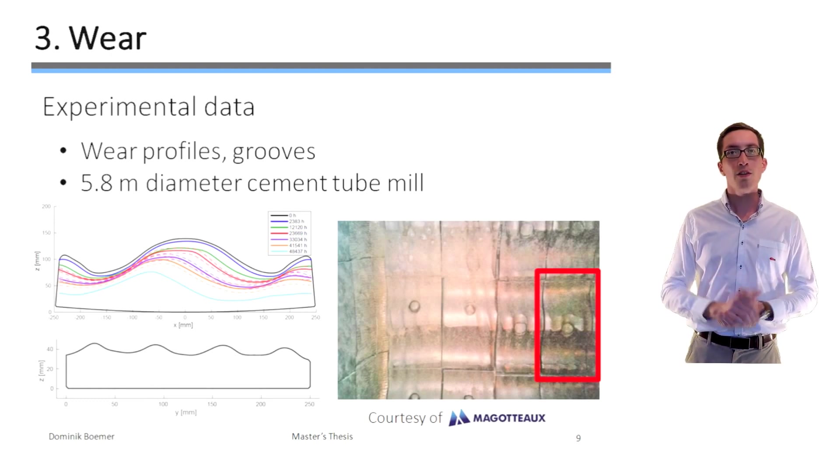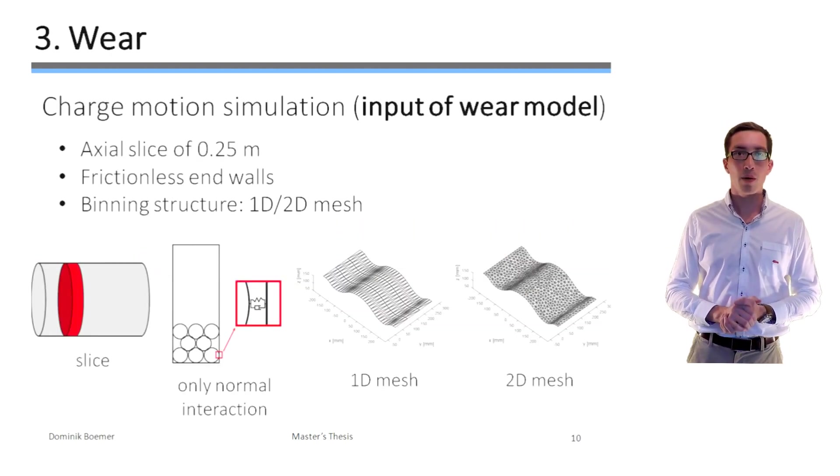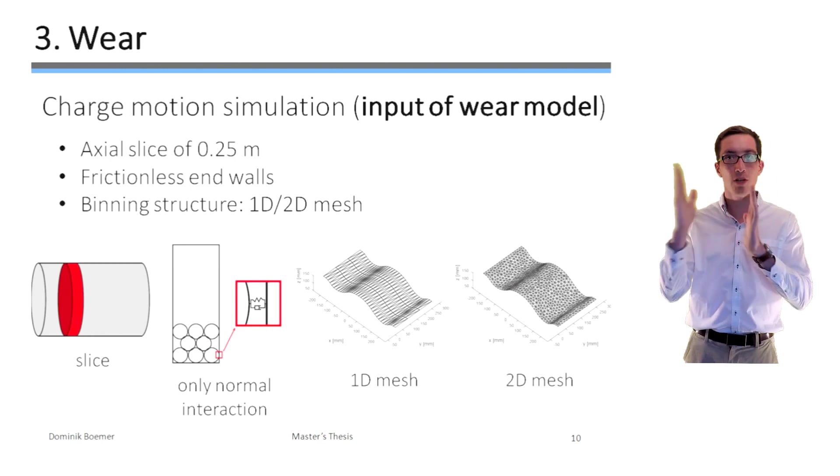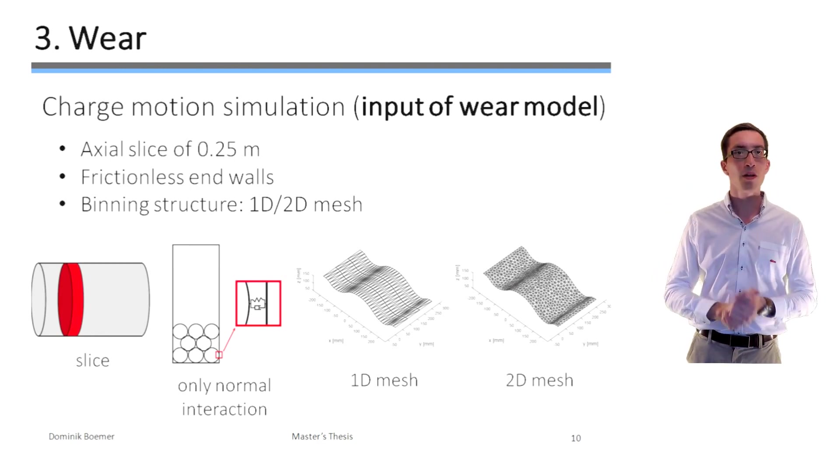To predict this change in the geometry, a wear model is required. This model translates kinematic, dynamic, or energetic data like for instance the tangential damping energy into an equivalent volume. For this reason, a charge motion simulation is also required.